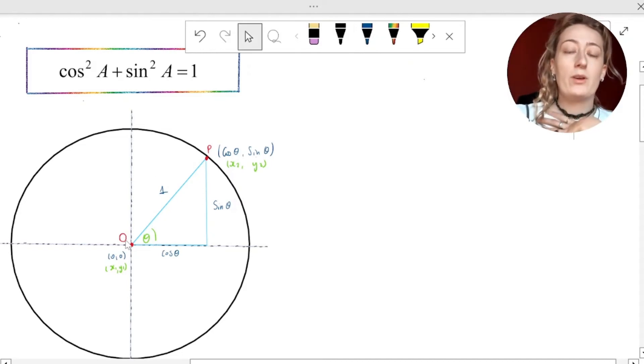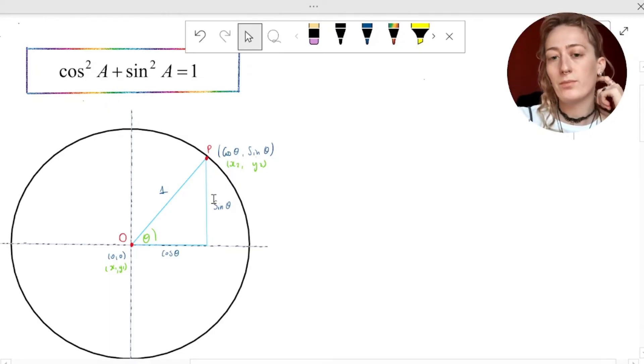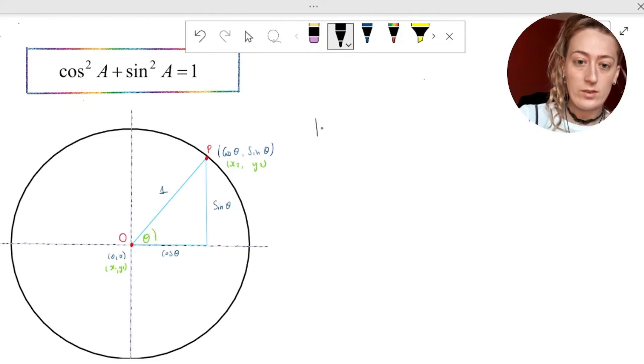So we know that the distance between O and P is equal to one. So we're basically going to find the distance between O and P, the points zero, zero, and the point cos theta sine theta, using our distance formula, and then let it equal to one to get our result. So O and P, the distance O and P, we know is equal to one.